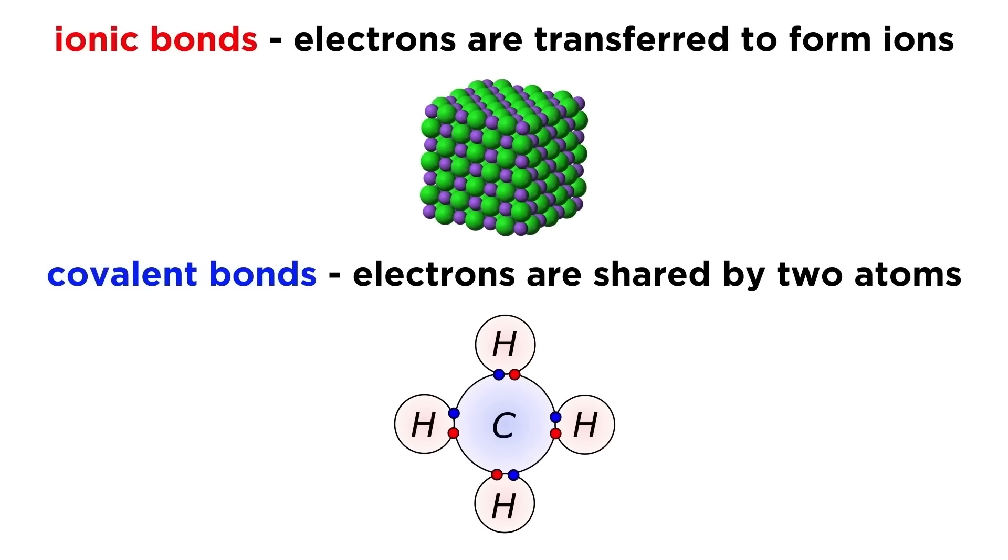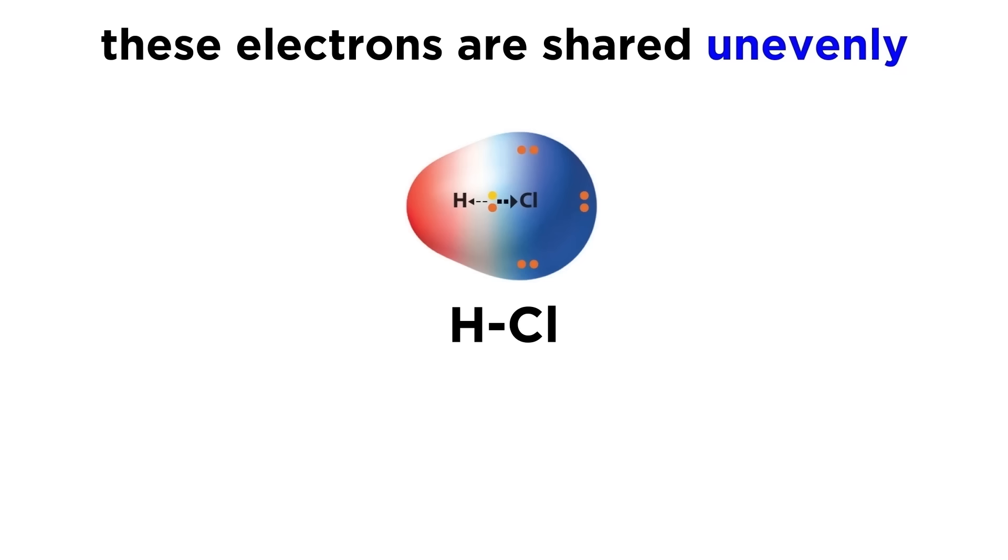When two atoms interact, they can either share electrons to form a covalent bond, or one can transfer one or more electrons to the other to form ions, which then form an ionic bond with one another. But the electrons in the covalent bond may not be shared precisely evenly. The electron density may be skewed more toward one atom than the other.